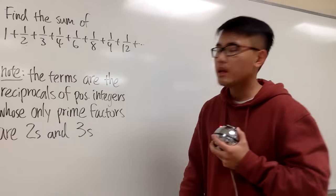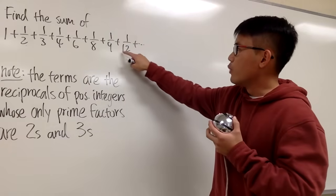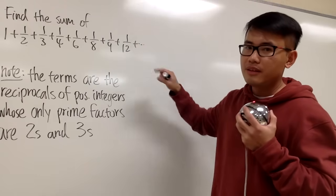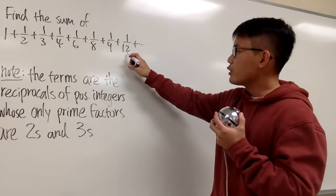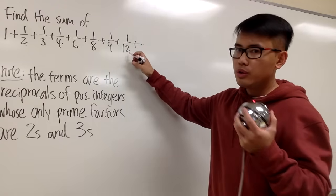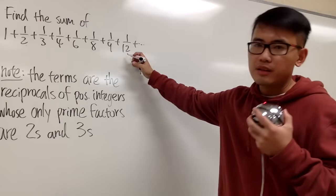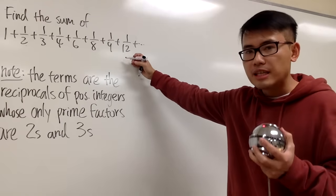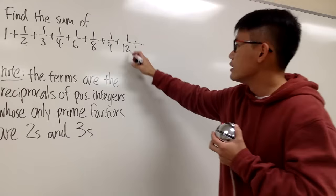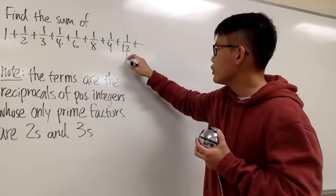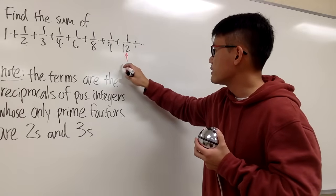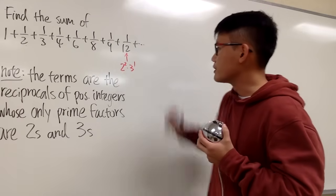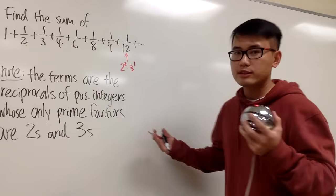What does this mean? Let's take a look at 1/12, especially the 12 in the denominator. If you break down 12, you know 12 is the same as 2 times 6, and you can keep going — 6 is the same as 2 times 3. So all in all, I can say 12 is the same as 2 to the second power times 3 to the first power. That's 12.